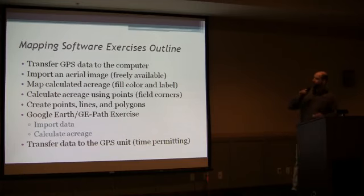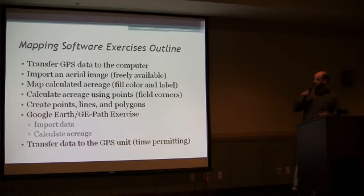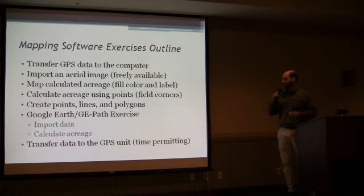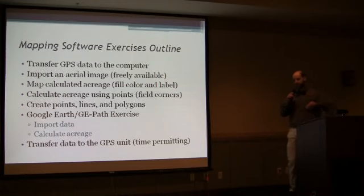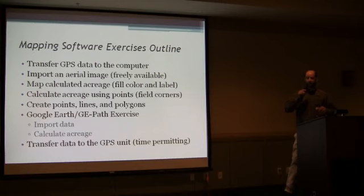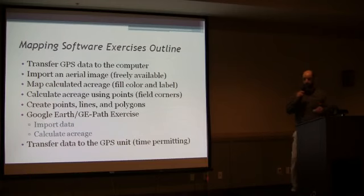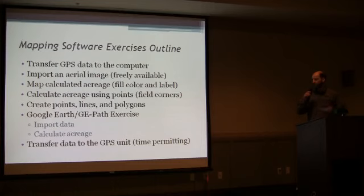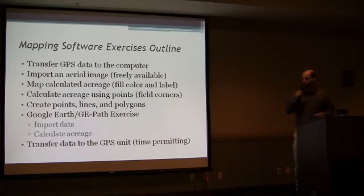This is a sample of the outline we go through in class: transferring GPS data to the computer, working with imagery, and calculating acreage. We go through a couple of different methods of calculating acreage — one is physically walking a boundary or perimeter of a field. There has also been a lot of interest in calculating acreage by dropping points at field corners or timber tract corners. We also go through the main map features of creating points, lines, and polygons and how those can be beneficial to mapping your resources.